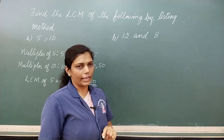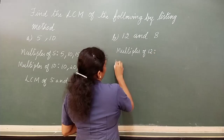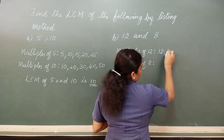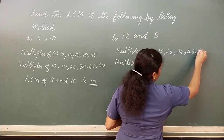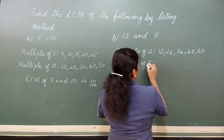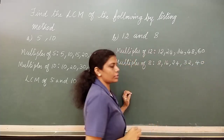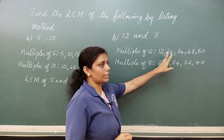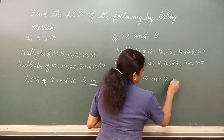The second problem: 12 and 8. Let us write the multiples of 12 and 8. Multiples of 12: 12, 24, 36, 48, 60. You can write any number of multiples — you just need to find the least common multiple. Multiples of 8: 8, 16, 24, 32 and 40. Now, the least common is 24 because 24 is found in both lists. So, the least common multiple is 24. LCM of 12 and 8 is 24.